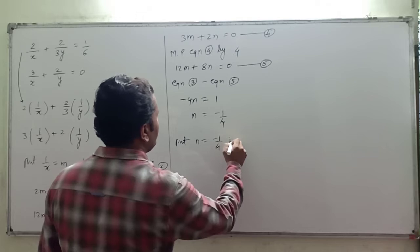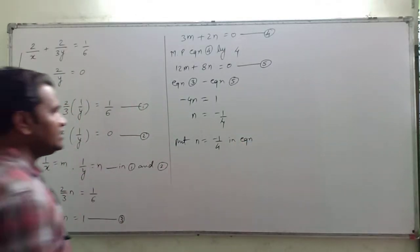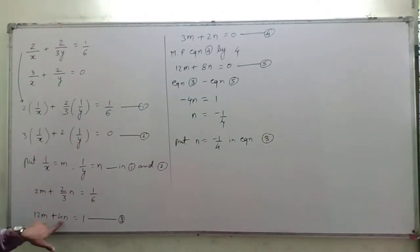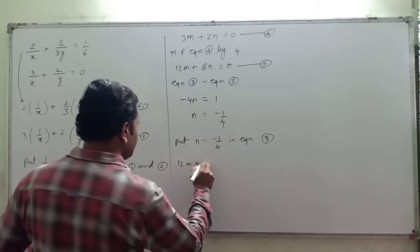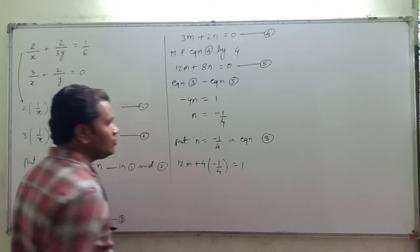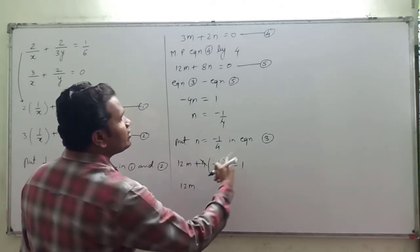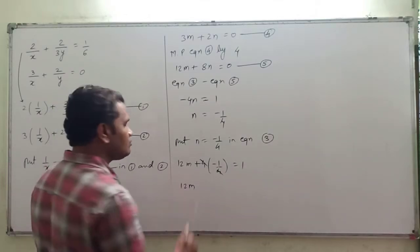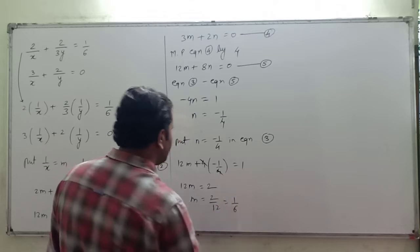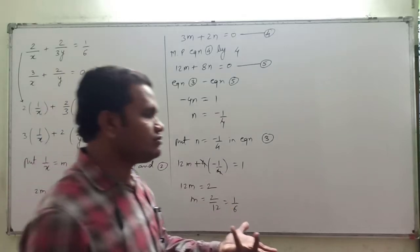Now we will put n = -1/4 in equation 3. So 12m + 4n becomes 12m + 4(-1/4) = 1. This simplifies to 12m - 1 = 1, so 12m = 2, giving m = 2/12 = 1/6. In this way we got n and m values.